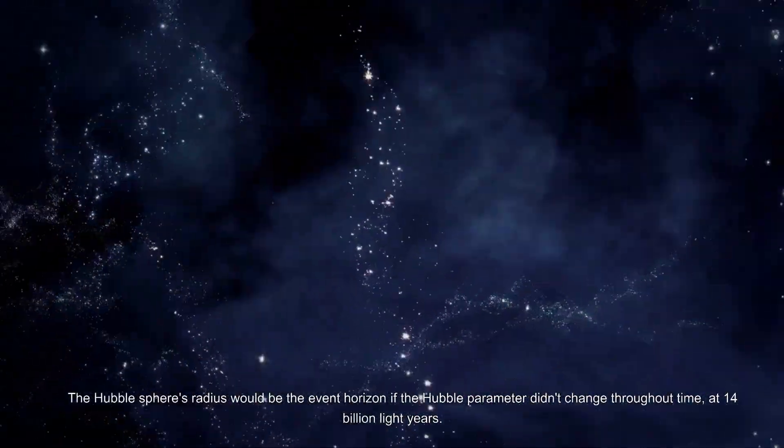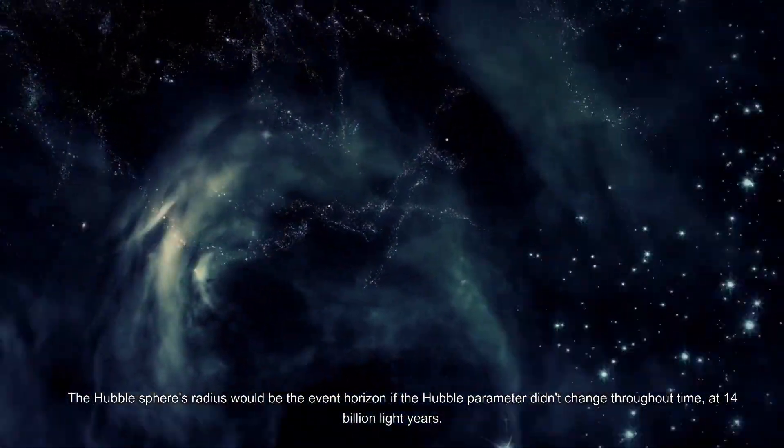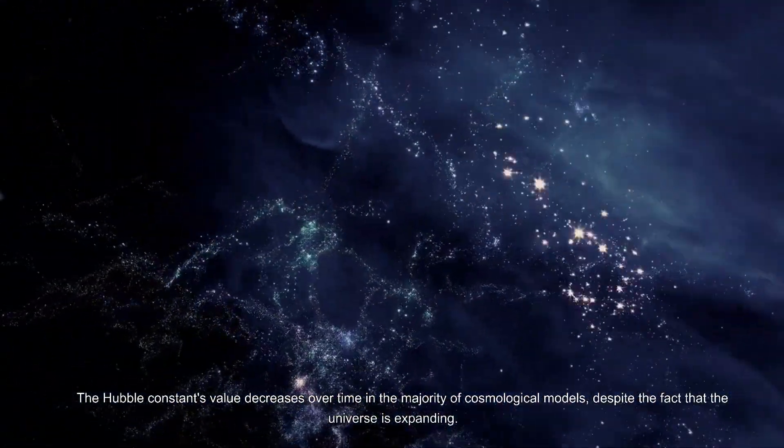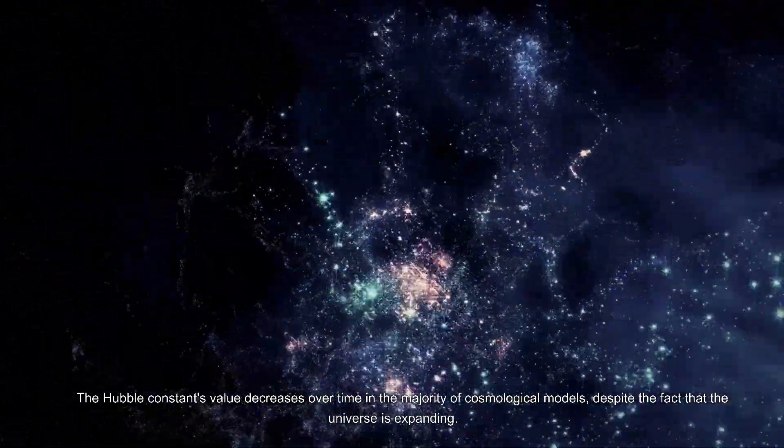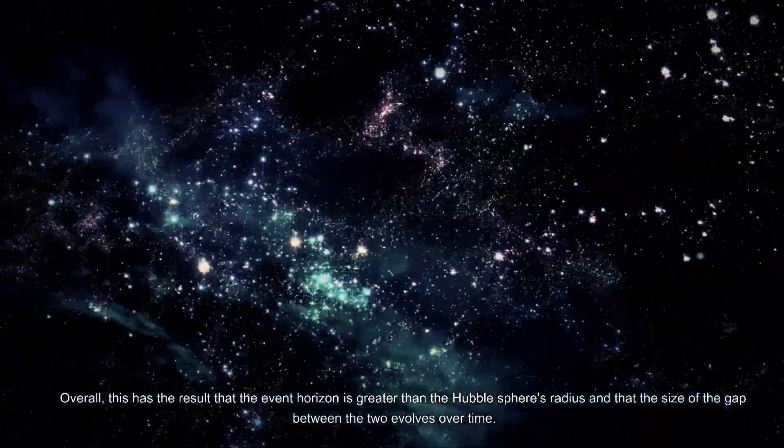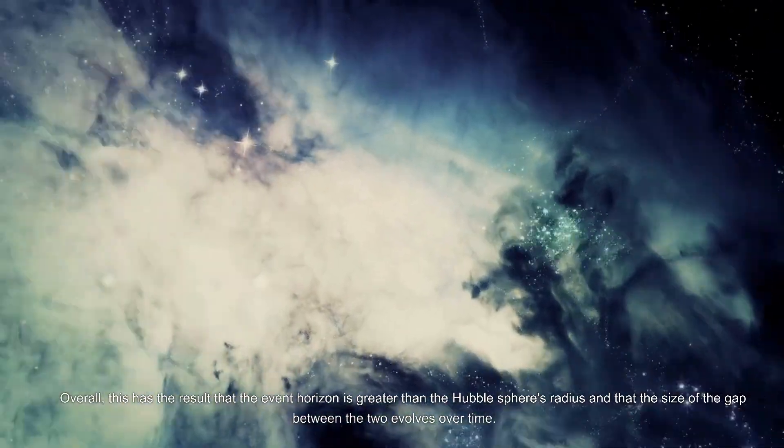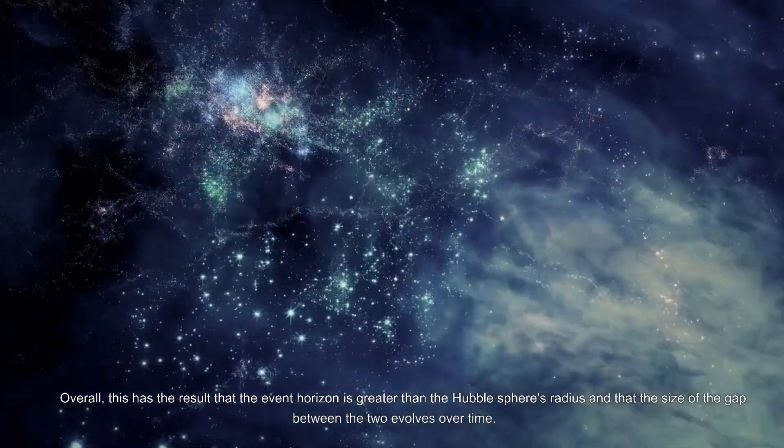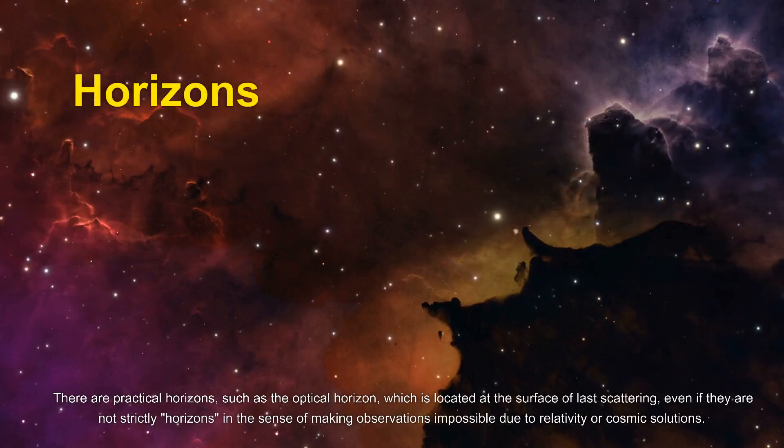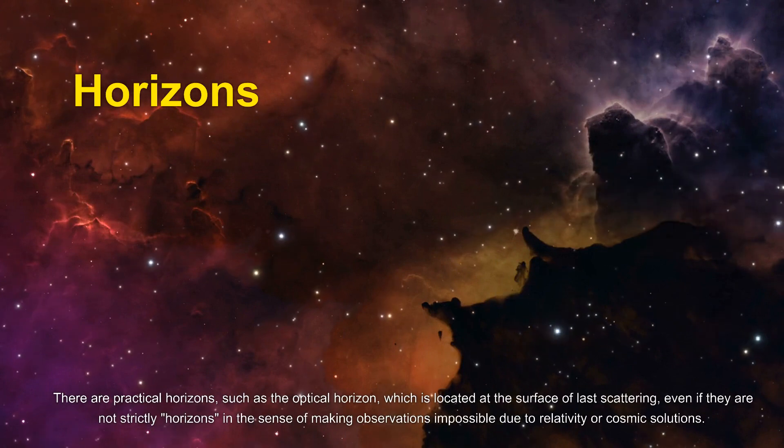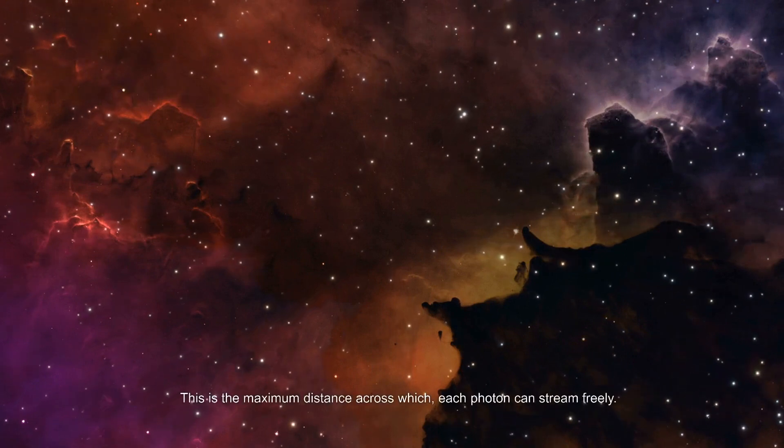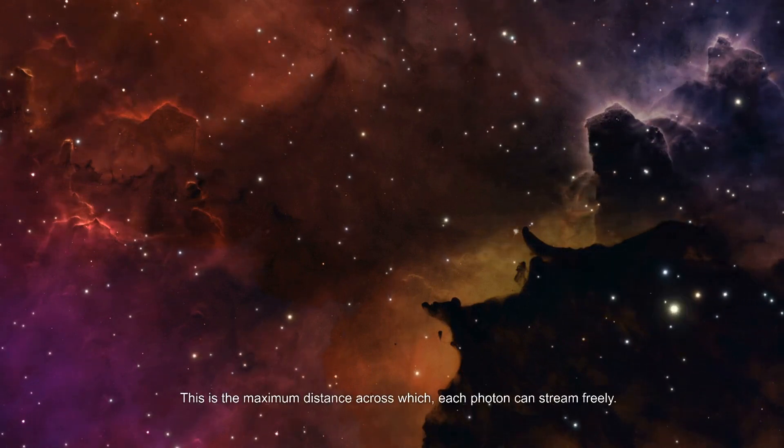The Hubble sphere's radius would be the event horizon if the Hubble parameter didn't change throughout time, at 14 billion light years. The Hubble constant's value decreases over time in the majority of cosmological models, despite the fact that the universe is expanding overall. This has the result that the event horizon is greater than the Hubble sphere's radius, and the size of the gap between the two evolves over time. There are practical horizons, such as the optical horizon which is located at the surface of last scattering. This is the maximum distance across which each photon can stream freely.